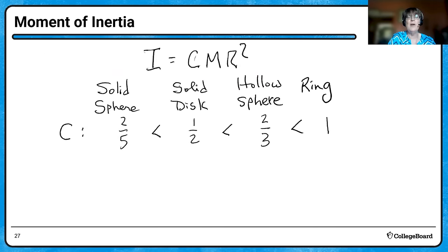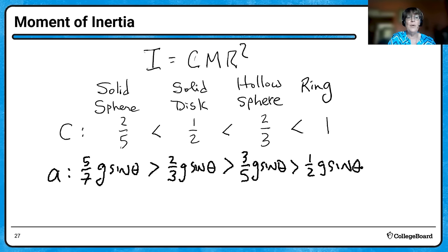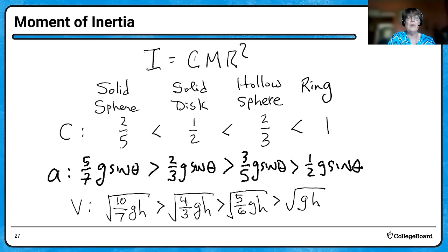Comparing all four different objects, the acceleration for the solid sphere is the greatest, just like the velocity was — as we would expect. The ring always has the least velocity and the least acceleration. You can try this at home — if we have the greatest velocity, we'd have the greatest acceleration, and likewise the least velocity corresponds with the least acceleration.